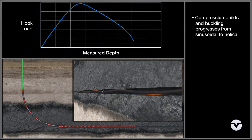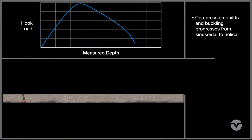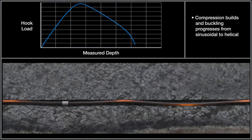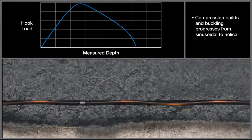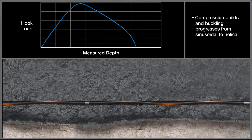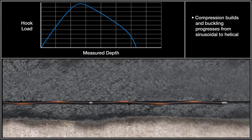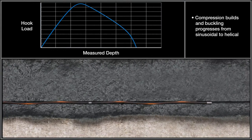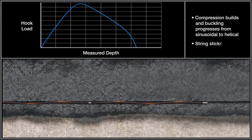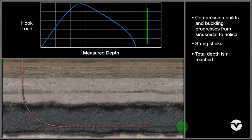Buckling can create a reciprocal effect on itself. More buckling results in more compression, which can result in more buckling, and can eventually trigger compression in the entire string. This can ultimately end up with the string sticking in the hole and preventing it from reaching the total depth.